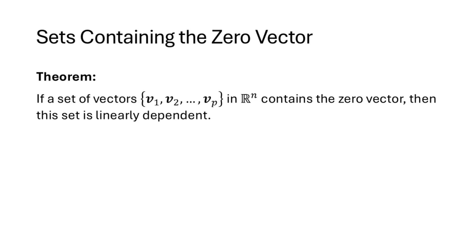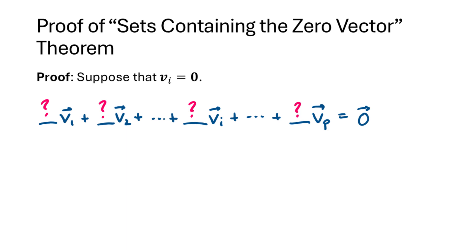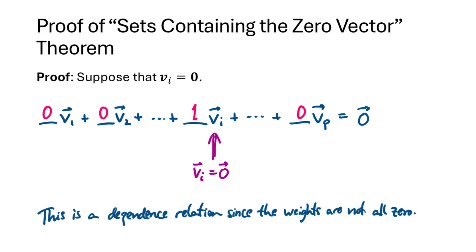Here's another theorem: if a set of vectors contains the zero vector, then the set is linearly dependent. Suppose vi is the zero vector. We can put any scalar in front of vi and the product will still be the zero vector. If we put a 1 in front of vi and zeros in front of all the other vectors, this adds up to the zero vector, and because 1 is not equal to zero, this is a dependence relation — so the set is linearly dependent.